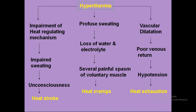The next condition is heat cramps. If the person is further exposed to extreme hot environments, then the person will profusely sweat, causing loss of water and electrolytes. This causes severe painful spasm of voluntary muscles, mostly the calf muscles — extreme spasm and twisting of muscles causing severe pain. This severe pain is due to dehydration and loss of electrolytes, mostly potassium and some sodium. So: profuse sweating leads to loss of water and electrolytes, then spasm of voluntary muscles, mostly calf muscles — this is heat cramps.